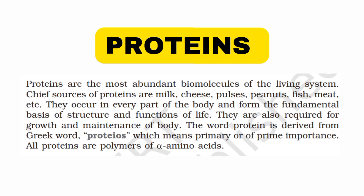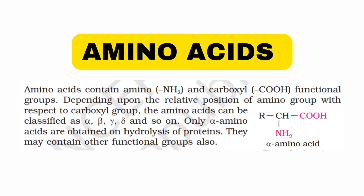All proteins are polymers of alpha amino acids. An amino acid has two components: an amino group (NH2) and an acid group (COOH). When the amino group is attached to the first (alpha) carbon, it is called an alpha amino acid. The alpha position refers to the first carbon adjacent to the carboxyl group.